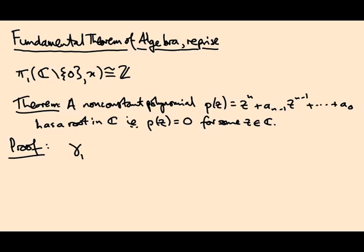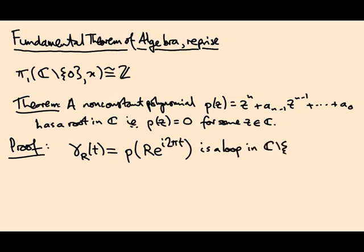You write down a loop, which I'm going to call gamma r of t. And that is the polynomial applied to the circle of radius r. So this, as t varies, traces out a circle, r e to the i 2 pi t. And then you apply p to that to get a loop. And the key thing is this is a loop not just in C but in C minus the origin.